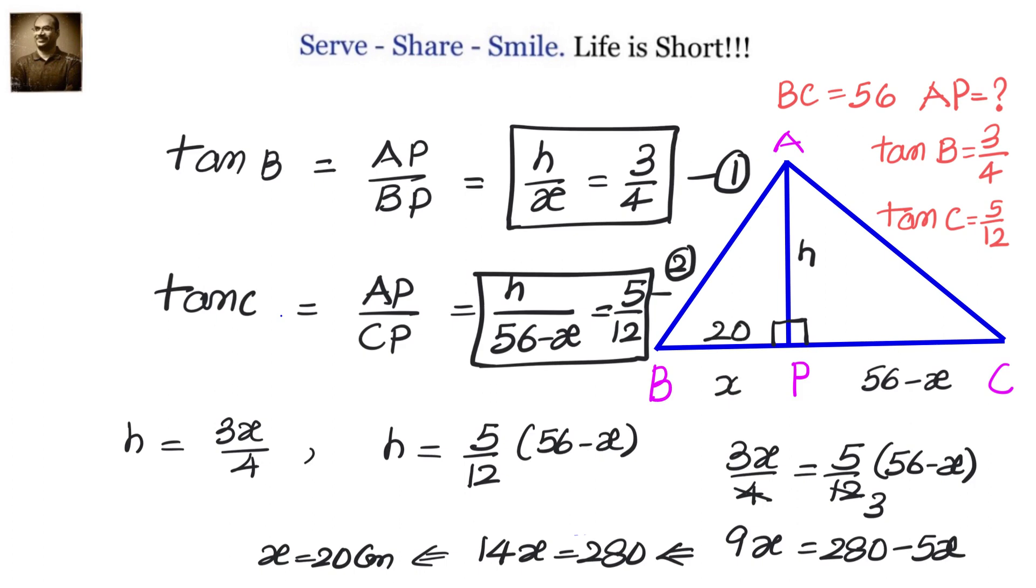If X is 20, then CP, 56 minus X, will be 36. Now H equals 3X by 4, that is 3 by 4 into 20. Simplify that - we will get 15 centimeters. So the answer is AP equals 15 centimeters when BC is 56 centimeters.